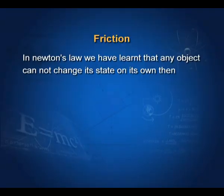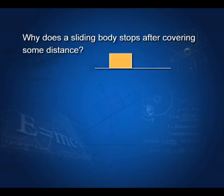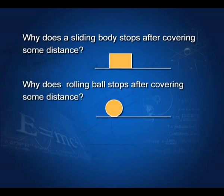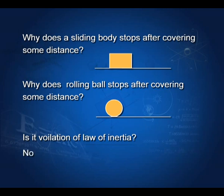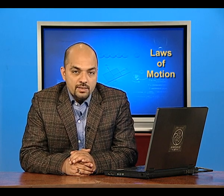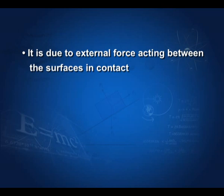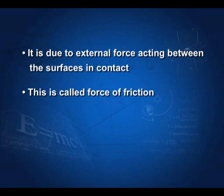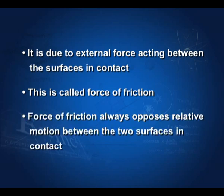In Newton's law we have learned that any object cannot change its state on its own. Then why does a sliding body stop after covering some distance? Why does a rolling ball stop after covering some distance? Is it a violation of the law of inertia? The answer is no. It stops due to an external force acting between the surfaces in contact.